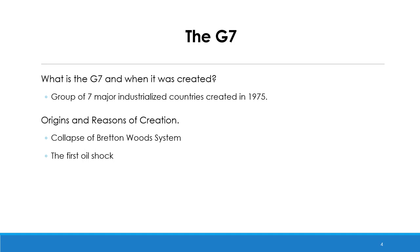Russia became a member of the G7 when it joined in 1998 to form the G8, but the group returned back to G7 by the suspension of Russia's membership in 2014. This group meets together each year to discuss issues such as climate change, energy policies, security, trade, and global economic governance. It is easy to imagine the weight of these countries in terms of their economic, political, and military power and their influence on the global economy. These countries also have a considerable influence on policies of multilateral organizations such as the IMF, the World Bank, and the WTO.